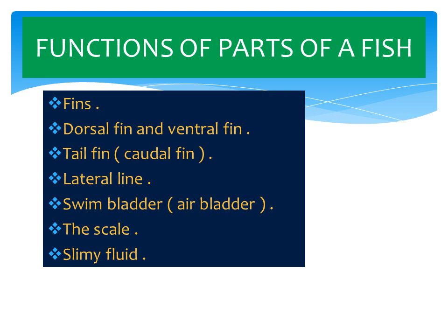Number four: the lateral line helps to detect pressure disturbances in water and therefore identify the source of danger. Number five: the swim bladder, also known as the air bladder. Its function is to keep the fish afloat — that is what we call buoyancy — even when it is not swimming, it is able to remain at the surface of water.